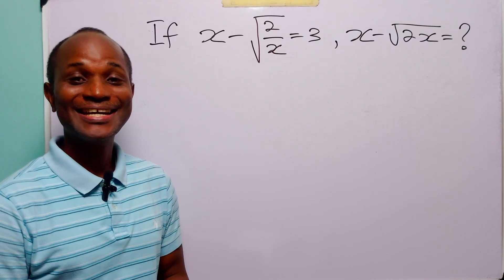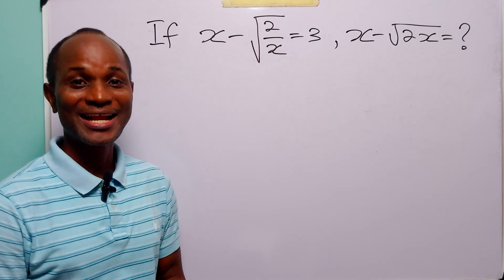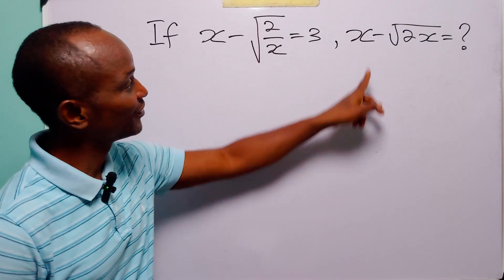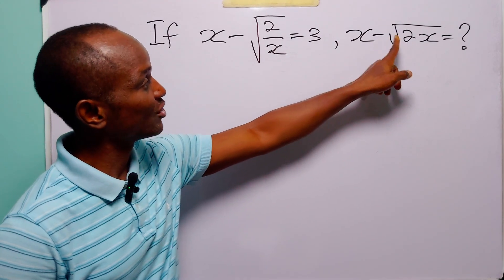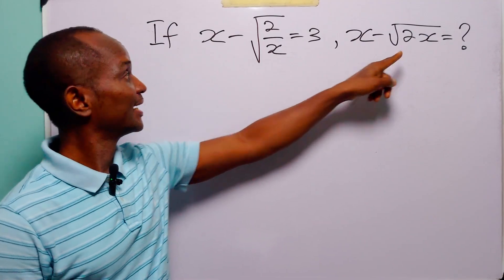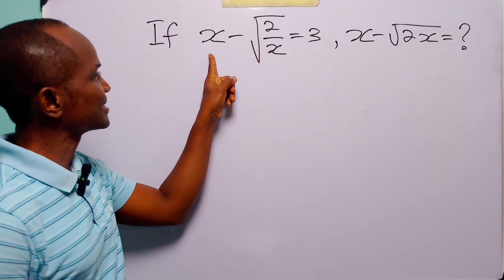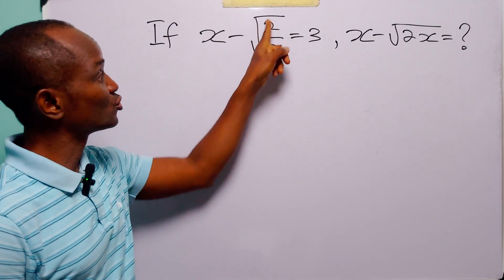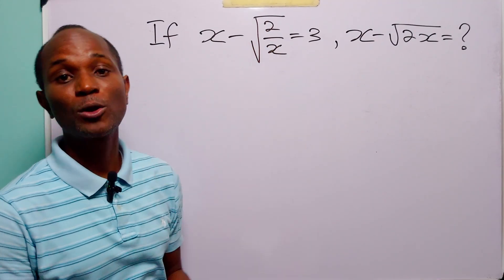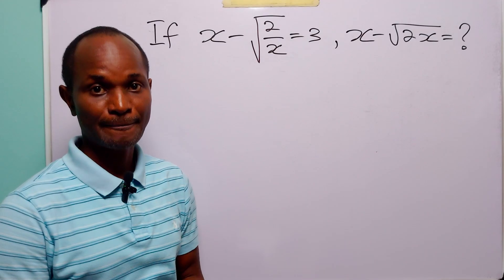Hello and welcome. In this smart tutorial, our task is to find the value of x minus root 2x, given that x minus root 2 over x is equal to 3.